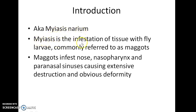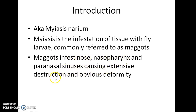Myiasis is the infestation of body tissue with fly larvae, commonly referred to as maggots. Maggots can infest the nose, nasopharynx, and paranasal sinuses, causing extensive destruction and obvious deformity.